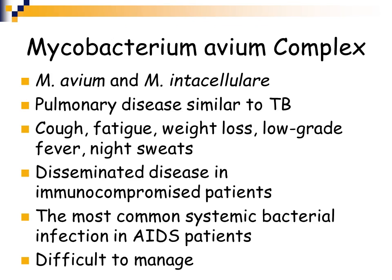We'll start by talking about the mycobacterium avium complex, or MAC. The two major organisms in MAC are mycobacterium avium and mycobacterium intracellulare. These cause a pulmonary disease similar to tuberculosis where the symptoms are coughing, fatigue, weight loss, low-grade fever, and night sweats — the same symptoms as tuberculosis. You can get disseminated disease in immunocompromised individuals, and MAC is the most common systemic bacterial infection in AIDS patients.